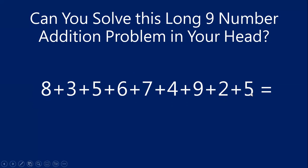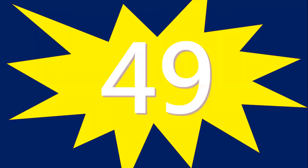5 and 5 make 10. There's 3 sets. So that's 30. 6 and 4 make 10. There's 4 sets. So that's 40. And then we just have this 9 left. So 40 plus 9 is 49. And that is the correct answer.